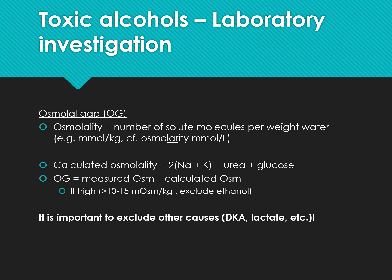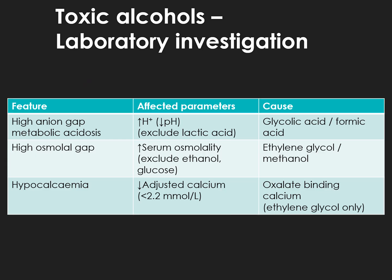For the osmolal gap: osmolality equals the number of solute molecules per kilogram of water. Calculated osmolality equals 2(Na⁺ + K⁺) + urea + glucose. The osmolal gap equals measured osmolality minus calculated osmolality. If high (greater than 10–15 mmol/kg), this may indicate toxic alcohols after excluding ethanol. Features include high anion gap metabolic acidosis, high osmolal gap, and hypocalcaemia. The cause of the high anion gap metabolic acidosis is glycolic acid and formic acid; the high osmolal gap is from ethylene glycol or methanol; hypocalcaemia is due to oxalate binding calcium.